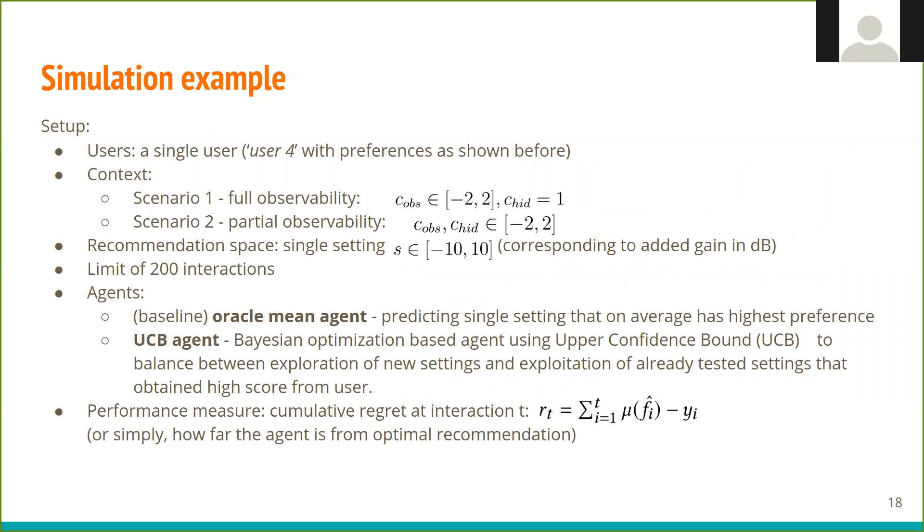And we measure the performance by cumulative regret at interaction T, which is simply how far the agent is from optimal recommendation.